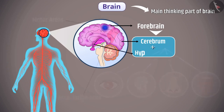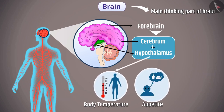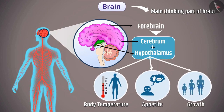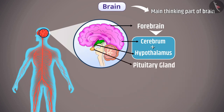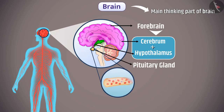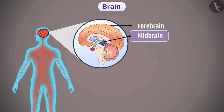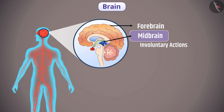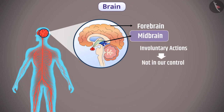The motor areas control the movement of voluntary muscles. The hypothalamus controls functions such as body temperature, appetite, and growth. The pituitary gland, present below the hypothalamus, secretes various hormones into the blood. The midbrain regulates involuntary actions in our body that are not in our control.